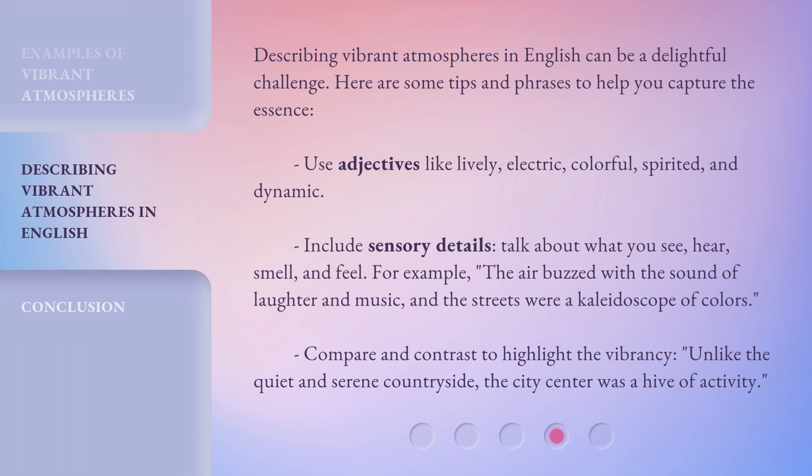For example, the air buzzed with the sound of laughter and music, and the streets were a kaleidoscope of colors. Compare and contrast to highlight the vibrancy — unlike the quiet and serene countryside, the city center was a hive of activity.